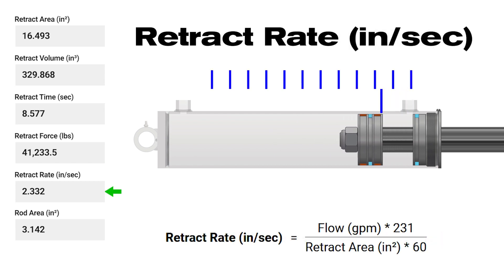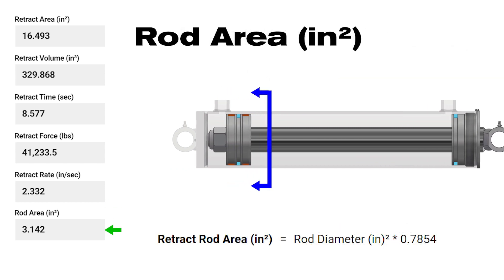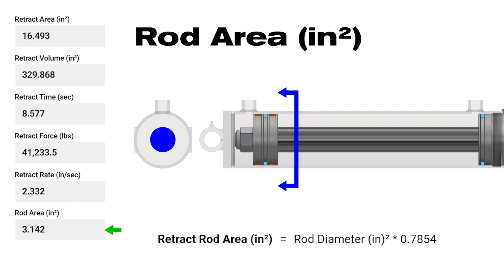Retract rate, measured in inches per second, is the speed at which a cylinder retracts. Rod area, measured in square inches, is the area occupied by the cylinder rod which is not acted on by the hydraulic fluid.